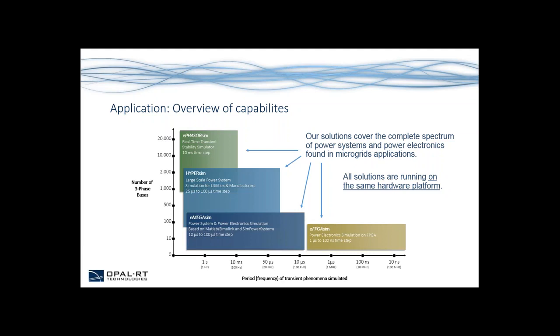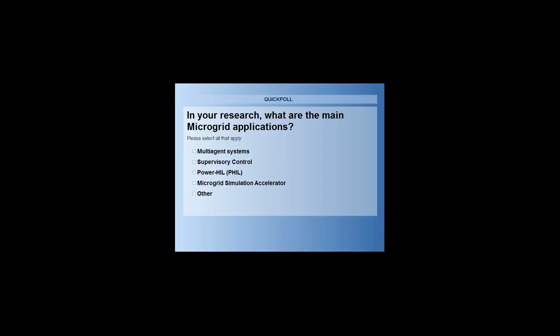We will now present the first poll. We have two polls during this presentation, and we'd like your input on the following question: in your research, what are the main microgrid applications? This is a multiple-choice question, so you can select more than one. The options are: multi-agent systems, supervisory control, power hardware-in-the-loop, microgrid simulation accelerator, or other. If you select other, please use the chat to describe your main applications.